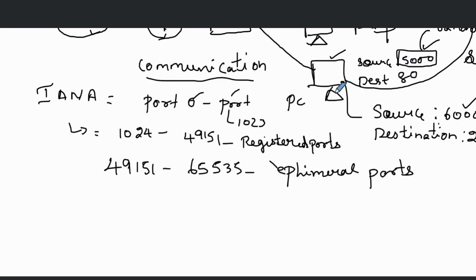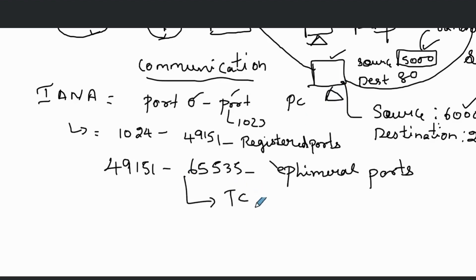Port numbers are a function of both main Layer 4 protocols — TCP and UDP.